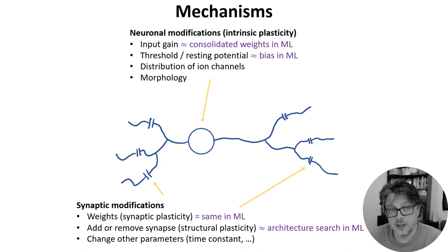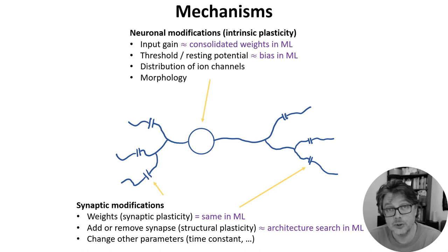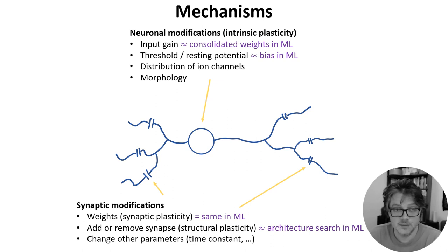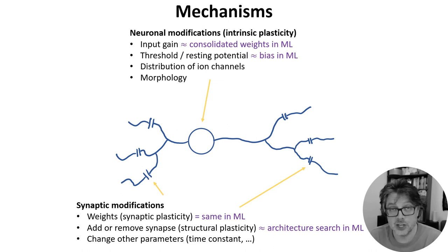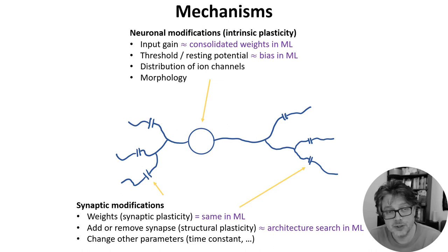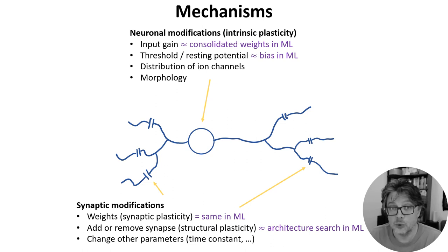We could also learn by changing other properties of a neuron. We could modify its input gain, its threshold or resting potential, and these could be considered similar to changing rates and biases in ML. We could change the dynamics of the neuron and the way it integrates information by altering the distribution of ion channels across the cell membrane, or even its shape.